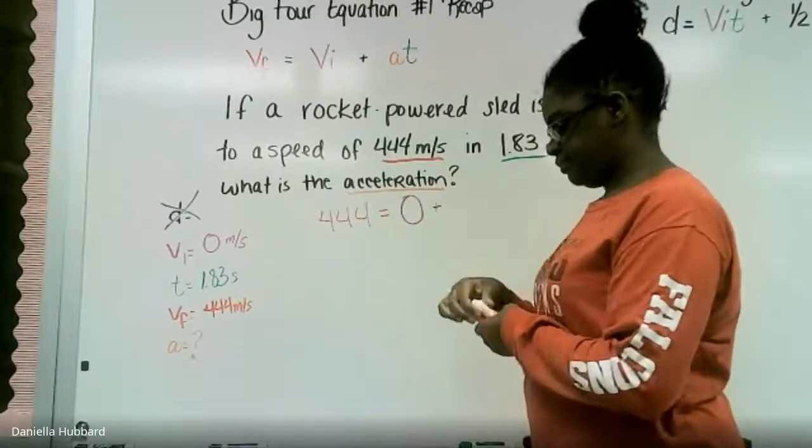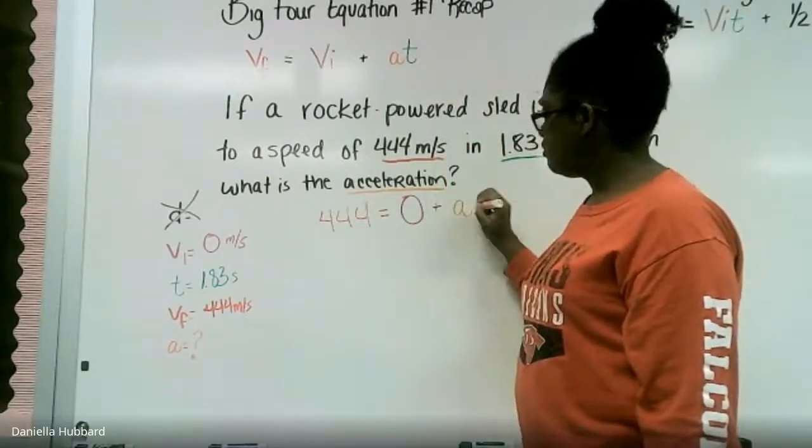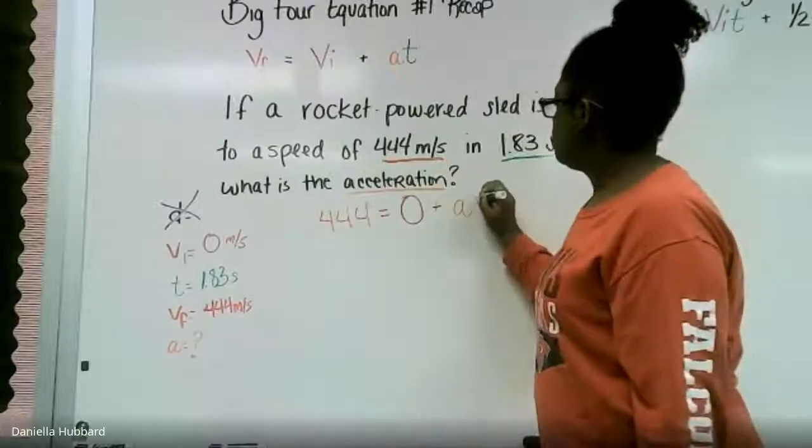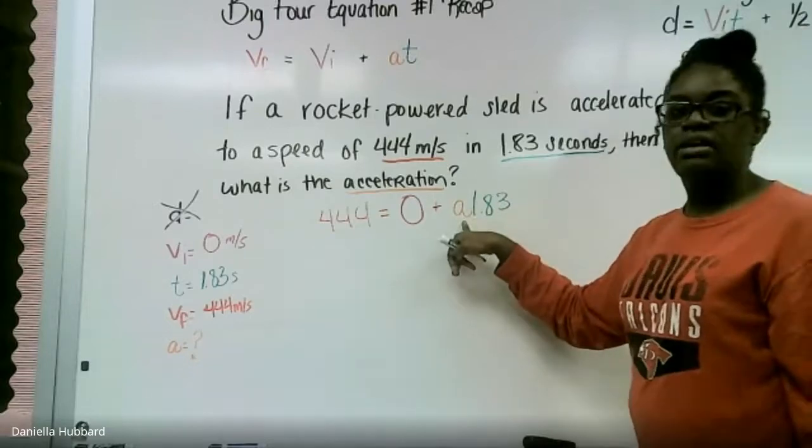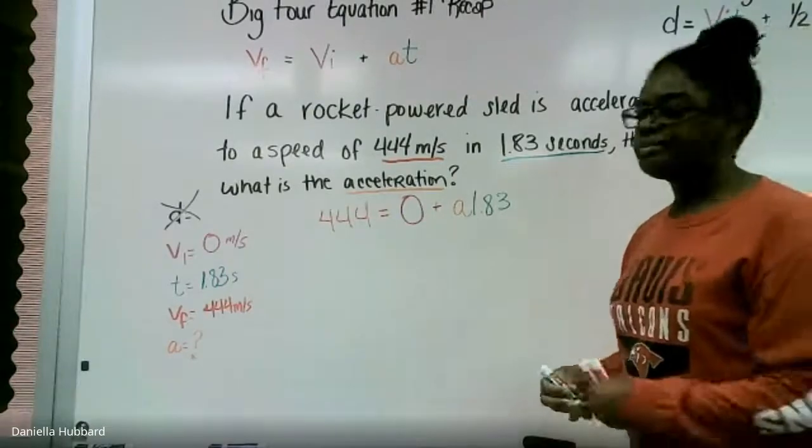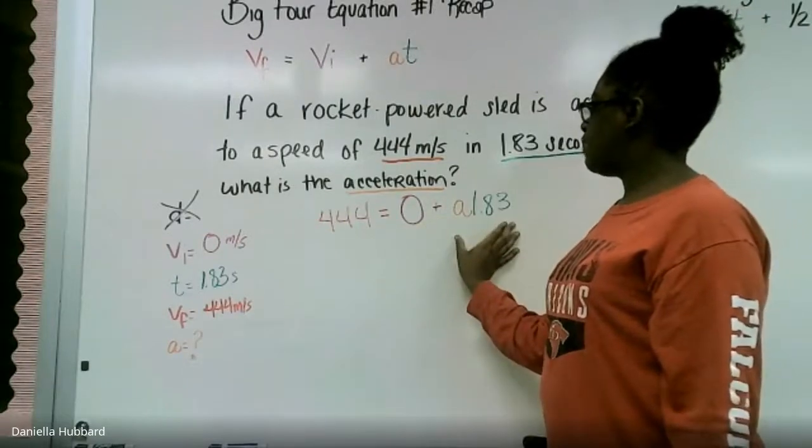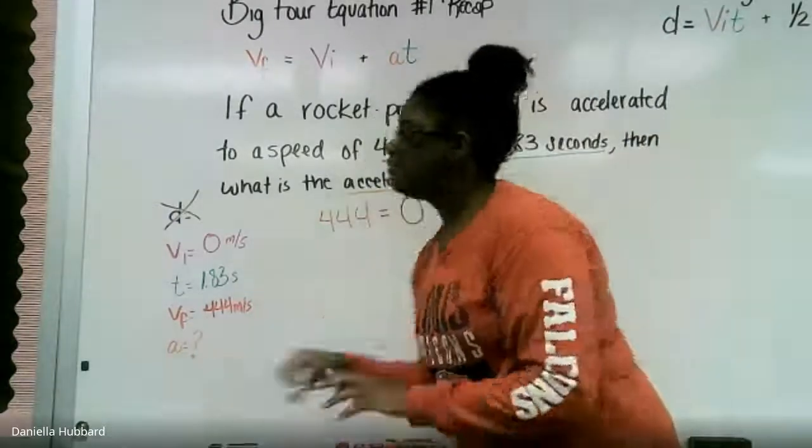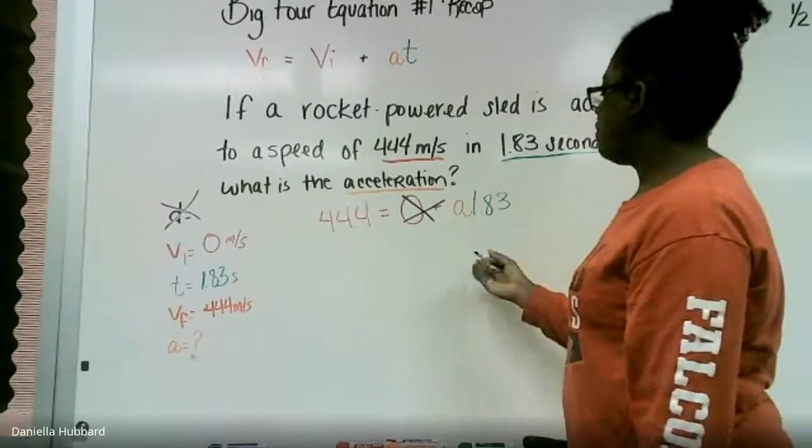Plus, we don't know what acceleration is, so I'm going to leave it as a times my time of 1.83. So 1.83 and my a are being multiplied together. Now we need to solve for a. Well, guess what, we have 0 plus a times 1.83. Anything plus 0 is going to equal itself, so we're going to take the 0 out of it because we don't need it.